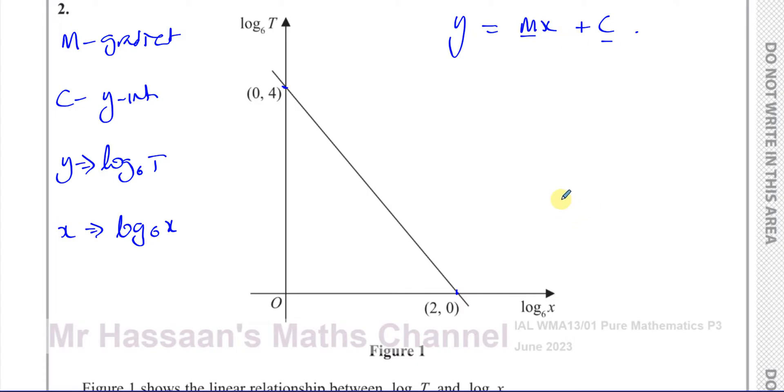Now what we need to do is we need to find what M is, which is the gradient, which we can find using these two points. It's a change in Y, which is 4 minus 0, divided by 0 minus 2, which gives you 4 over negative 2, which is negative 2. So we know the gradient is negative 2.